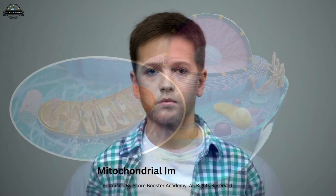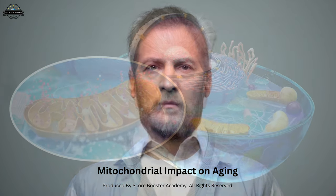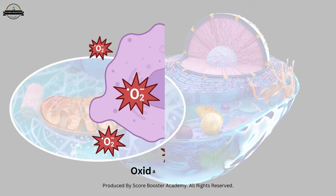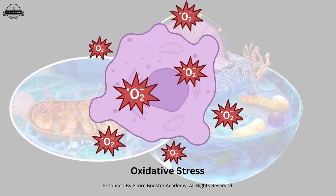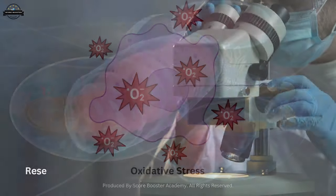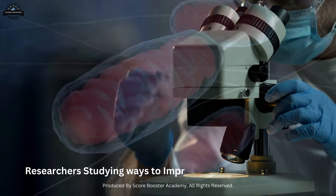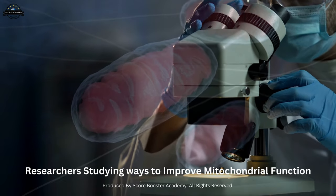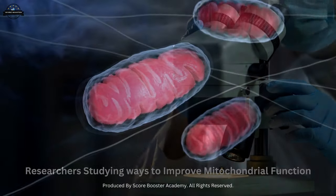Mitochondrial function has been closely linked to aging and longevity. The accumulation of mitochondrial DNA damage and oxidative stress over time can contribute to age-related decline. Researchers are studying ways to improve mitochondrial function to potentially slow down the aging process.